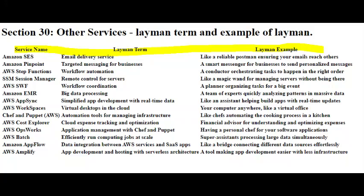Amazon Pinpoint is like a smart messenger for businesses. It helps them send targeted and personalized messages to their customers through various communication channels like emails, SMS, or mobile push notifications.